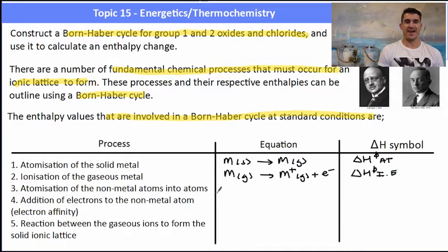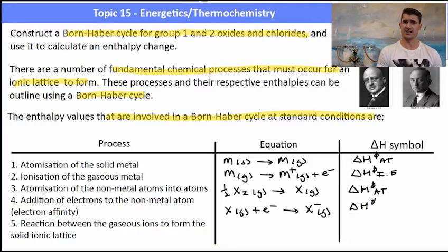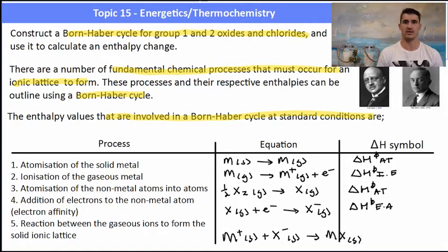The next part of the process is we need to have atomization of the non-metal atoms, the non-metal into its atoms. And generally because we're dealing with oxides and chlorides, we're dealing with things that are diatomic. So we have a half X2 goes to X and we need to balance that up because we don't have the same numbers of X's on both sides. So that's where the half comes from. That is atomization and it's actually bond breaking for that one. We then have the electron affinity. Those atoms in their gaseous state will now be able to accept an electron to form an ion. So that's delta H of electron affinity. And then we have the reaction to form the solid ionic compound. So the metal which is positively charged reacts with the non-metal which is negatively charged in their gaseous states to form the ionic lattice as a solid. And that's referred to as the delta H of lattice formation.